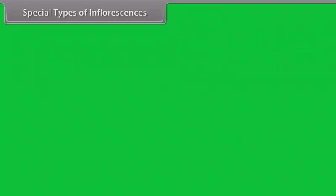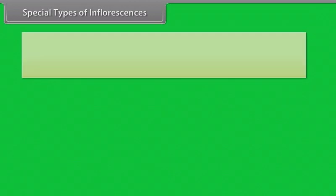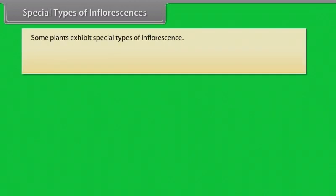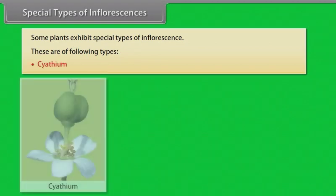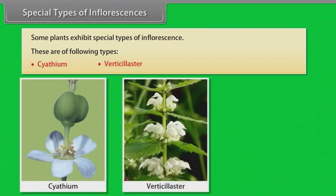Some plants exhibit special types of inflorescence. These are of the following types: cyathium, verticillaster, and hypanthodium.